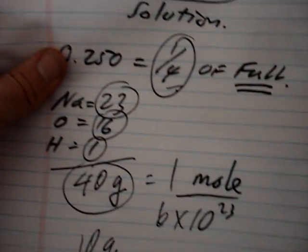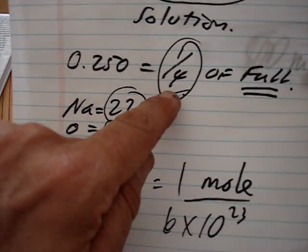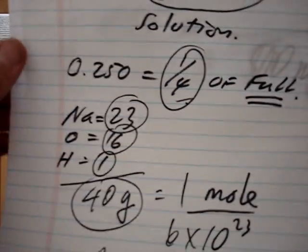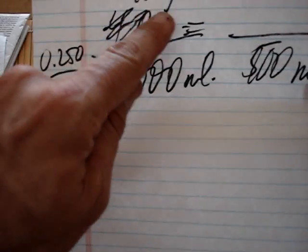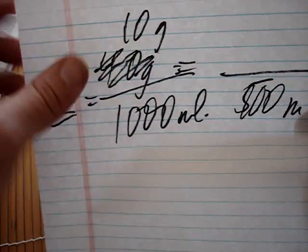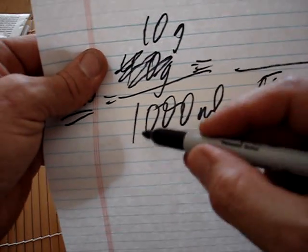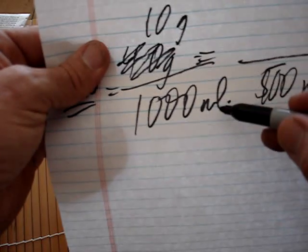So we had to take the 40 grams and reduce it because it's one quarter, 0.25 of the full strength, the full mole. So that's why we went from 40 down to 10 grams. Now that would be in a full 1000 milliliters.